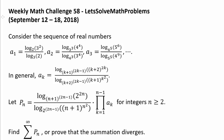Consider the sequence of real numbers a1, a2, a3, and so on. In general, a sub k is log base (k+1) to the (2k−1) power of (k+2) to the 2k power, divided by log base (k+2) to the (2k−1) power of (k+1) to the k-squared power.